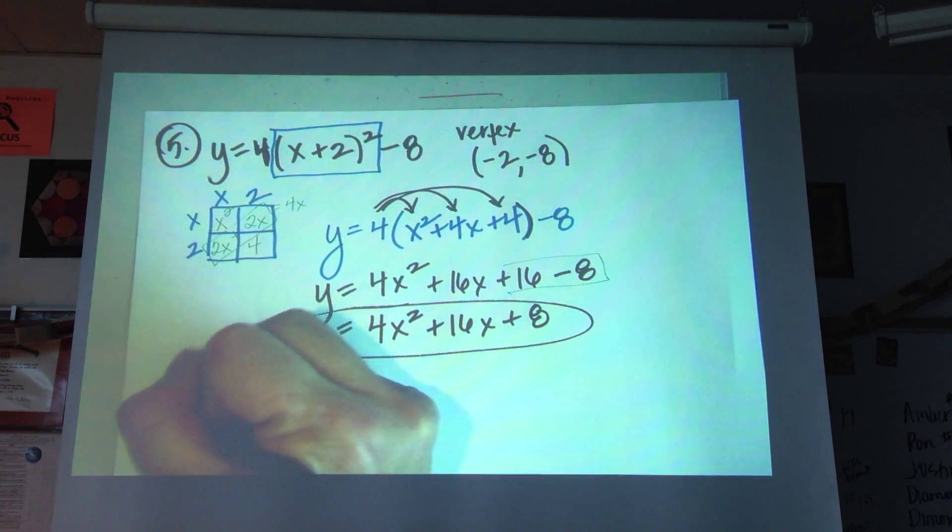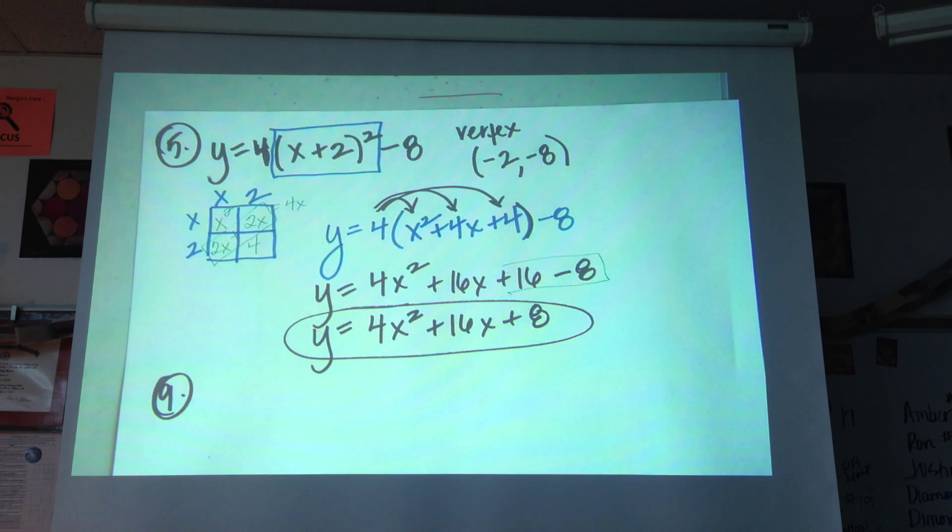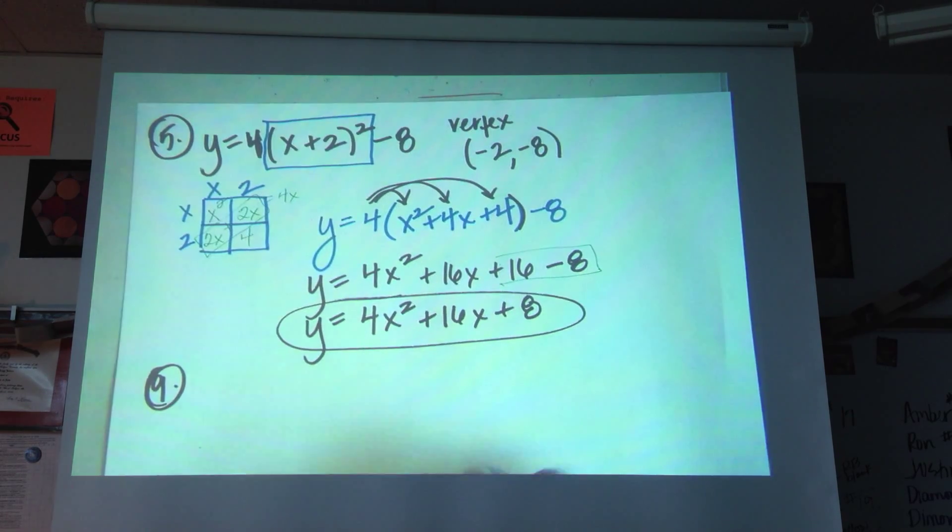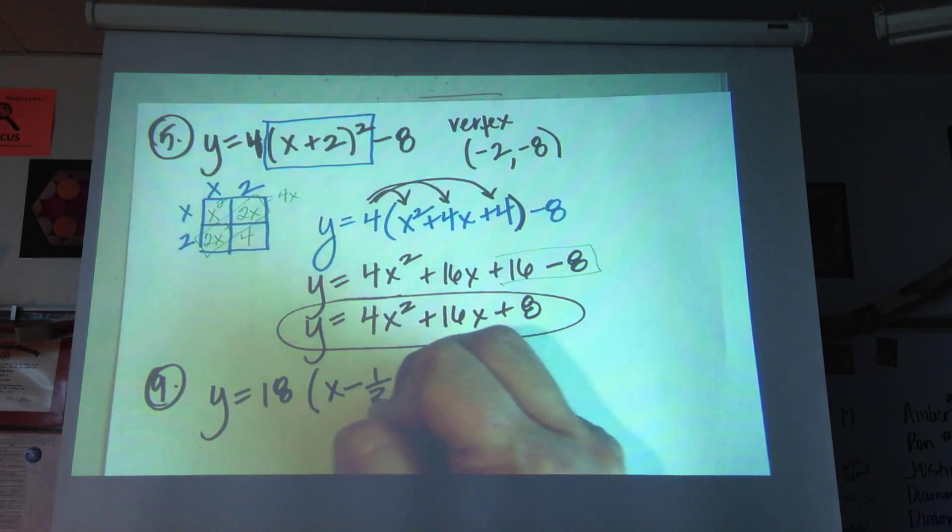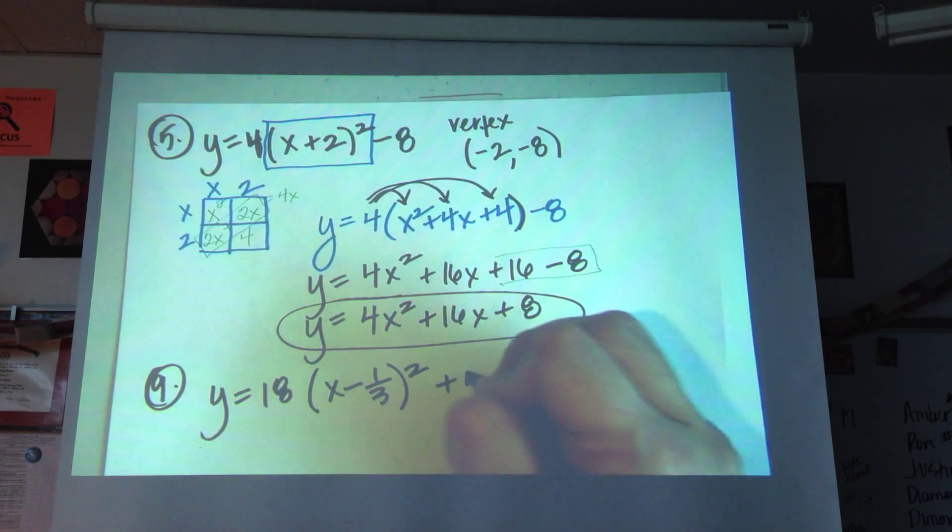I'm going to do number 9 as well. A lot of people are uncomfortable with 9 because it has a fraction in it. We don't need to be afraid of the fraction. We just need to stop and think. 18 times the quantity x minus 1 third squared plus 5.